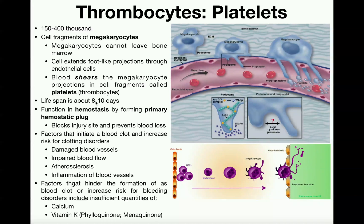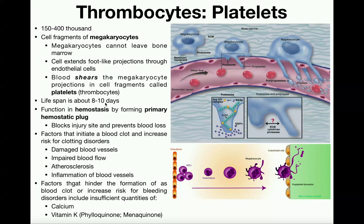Platelets are only going to last around eight to ten days — they have a very short lifespan. In fact, on average they have the shortest lifespan of all formed elements in the blood. And so for that reason they have to continually be generated.